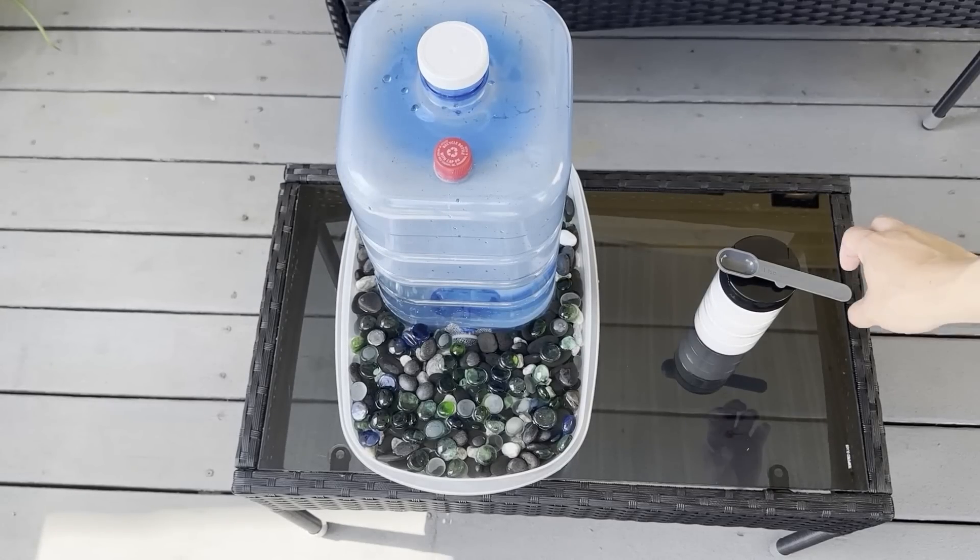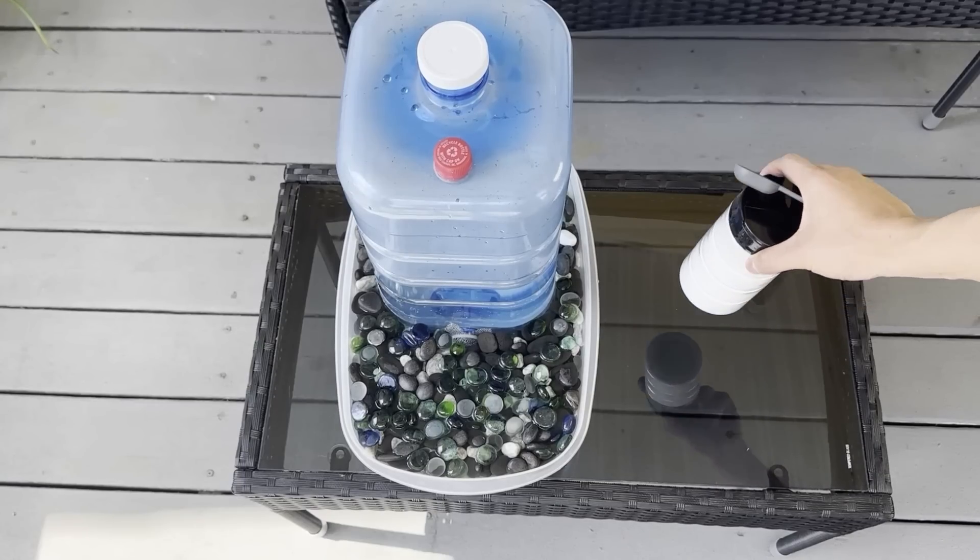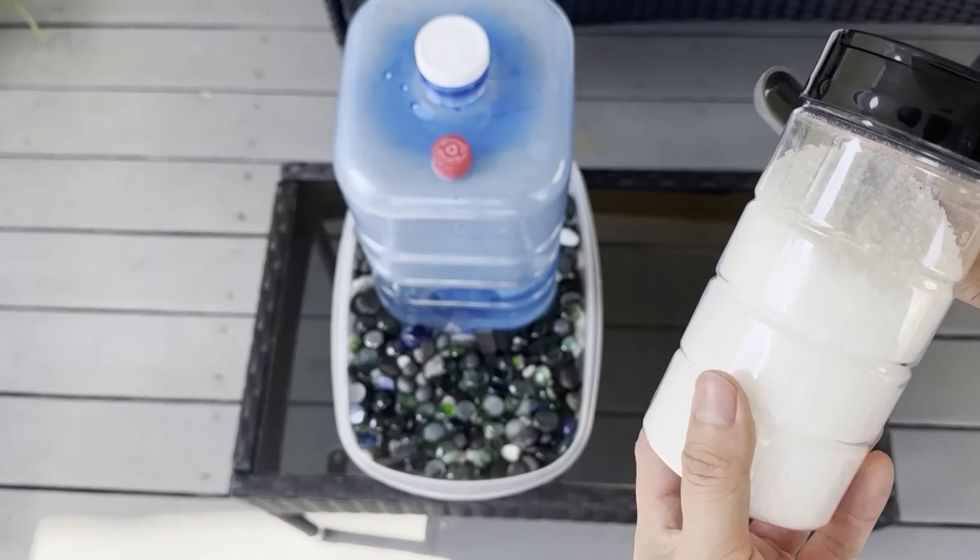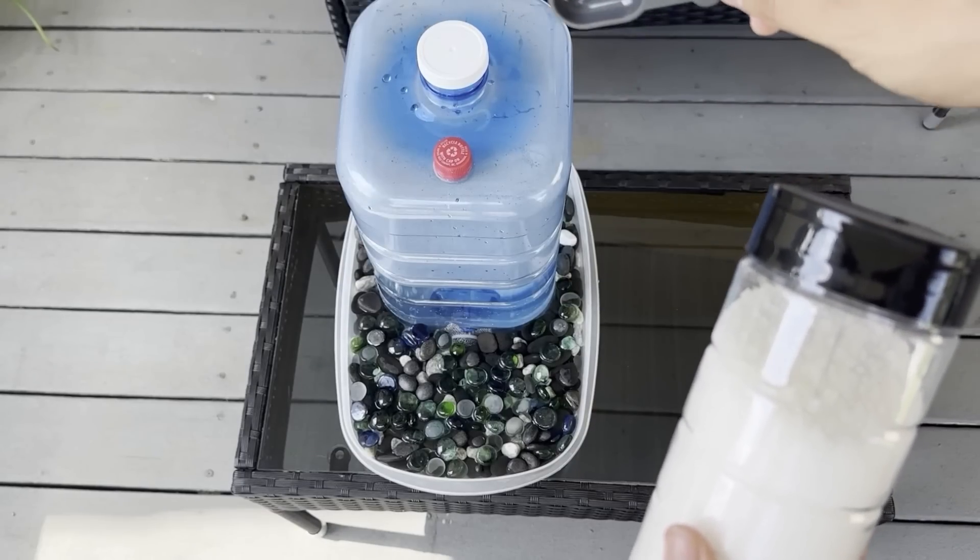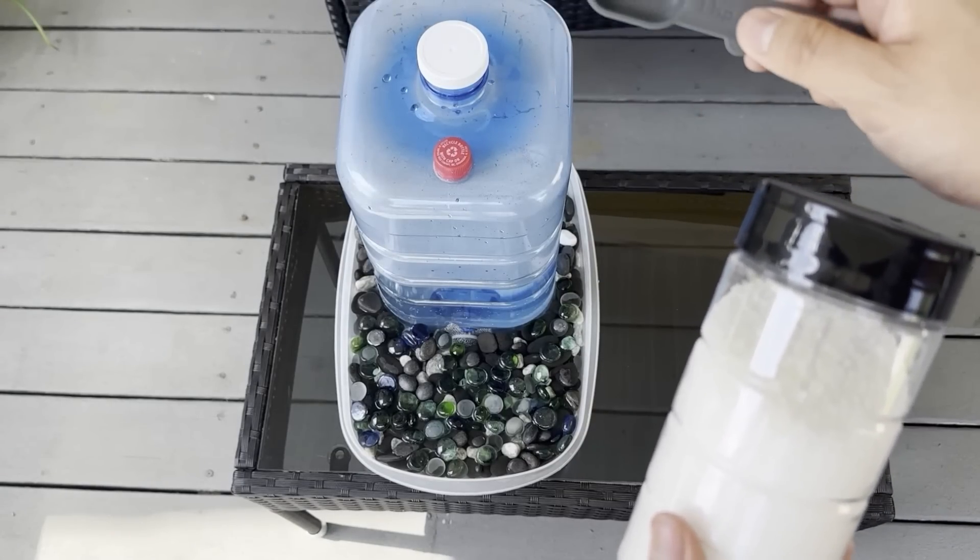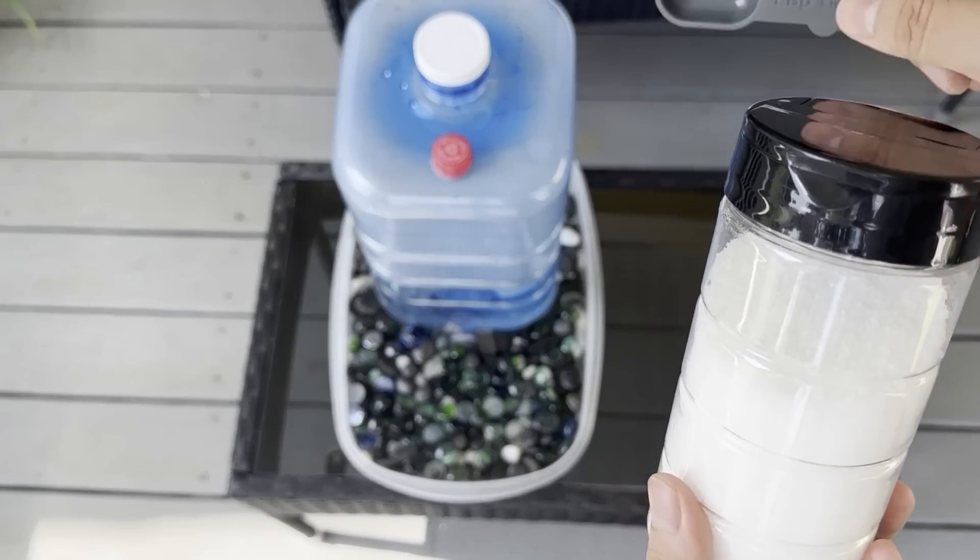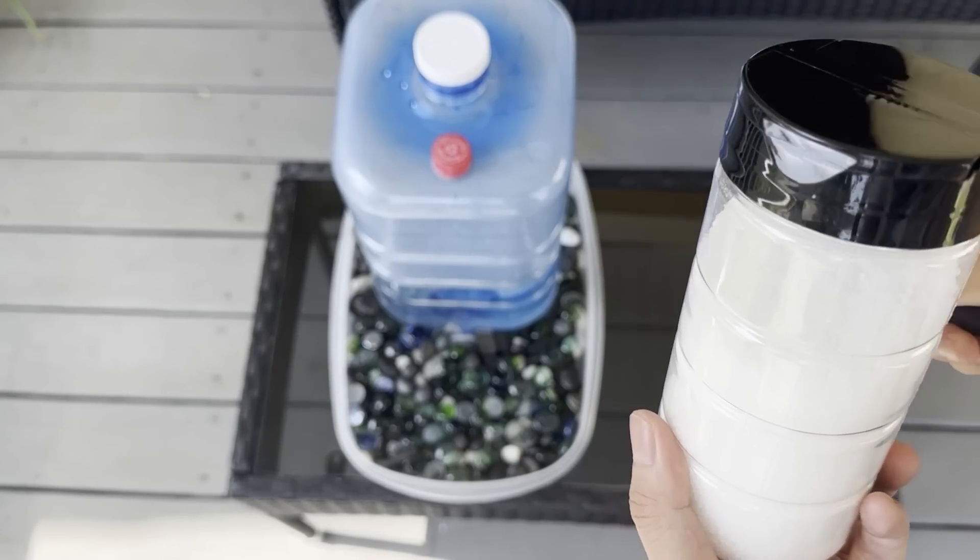The suggested ratio of sea salt to water is one teaspoon per gallon of water which will give you a 0.1 percent salt solution. If you choose to do this, you will need three teaspoons of salt for our DIY bee watering station in total.